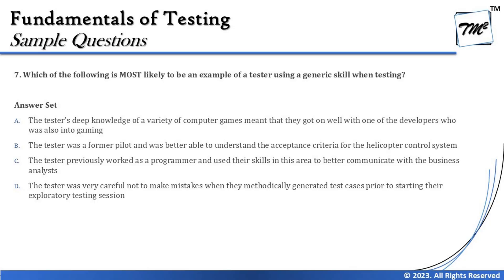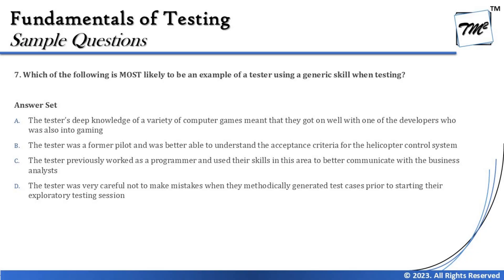Option C says the tester previously worked as a programmer and used their skills to better communicate with the business analyst. Two important things here: first, this tester's past experience is entirely about development; and second, having effective communication with the business analyst as a developer does not help build the generic skills of a tester or qualify them as a good tester candidate.